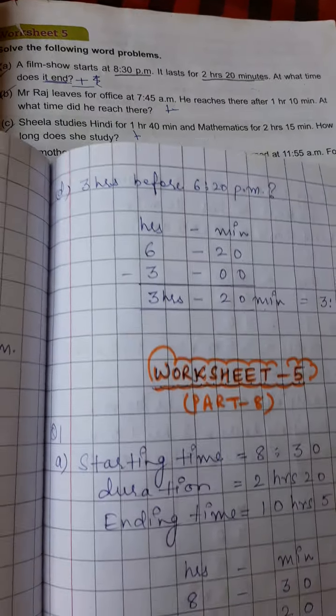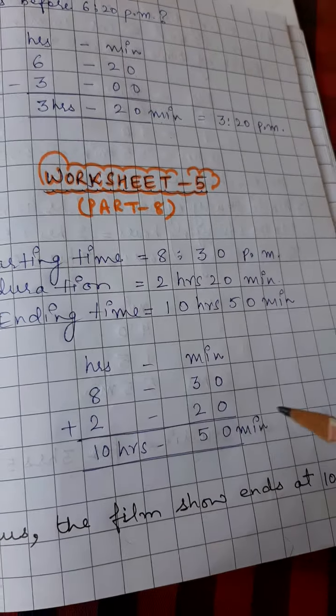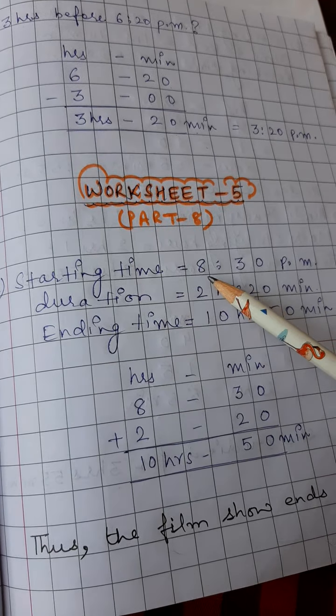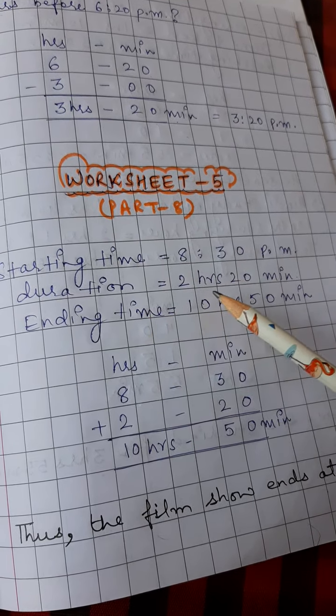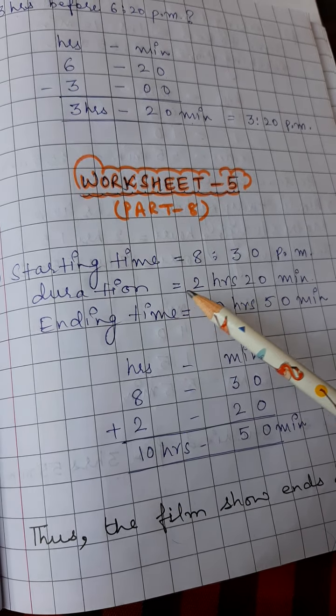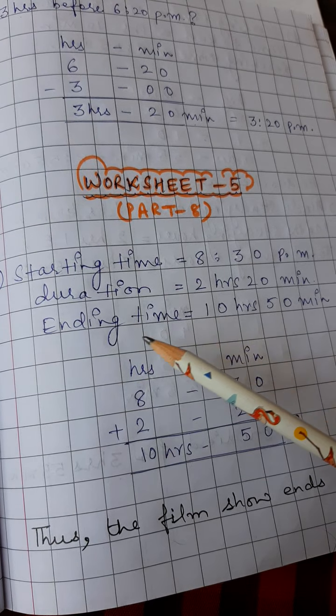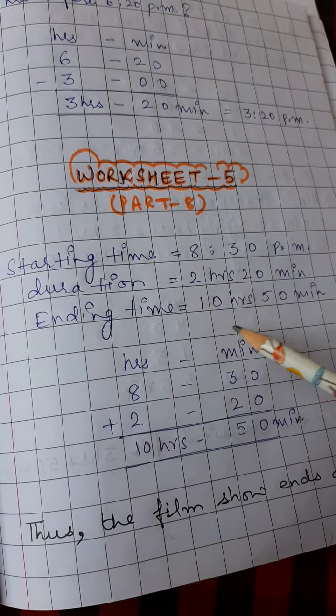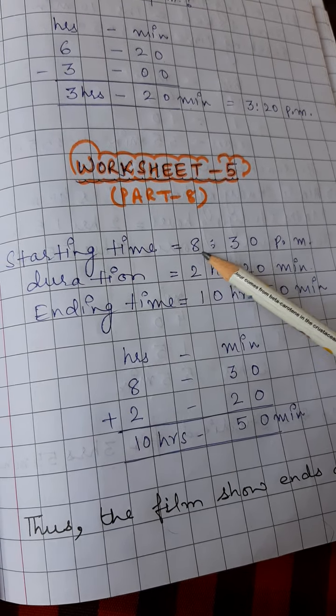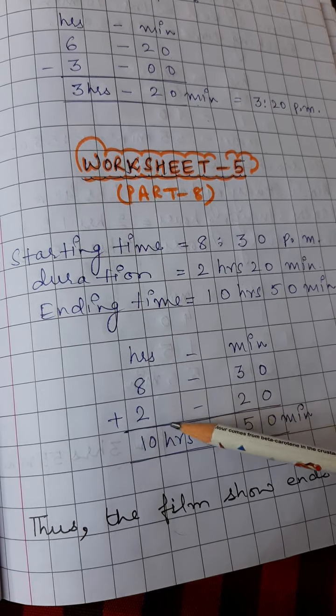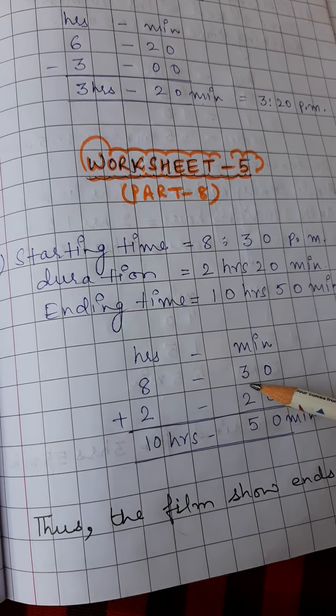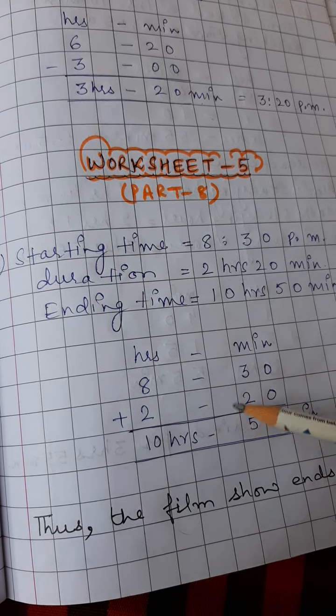So to find out this, write the statements like this: starting time or the starting time of the film is 8.30pm. Duration is 2 hours 20 minutes, duration means for how long does this film runs, and ending time. To find this time, we will add these 2, we will add 2 hours to the time 8.30pm. For that, make 2 columns, hours and minutes, separate it by using hyphen.